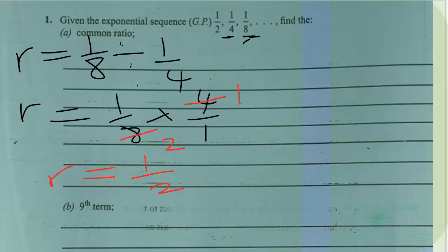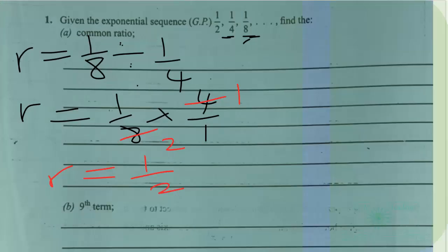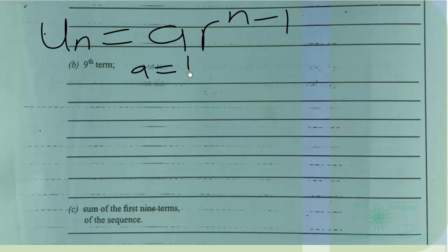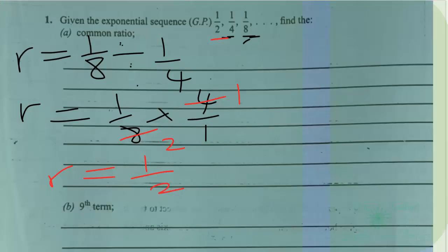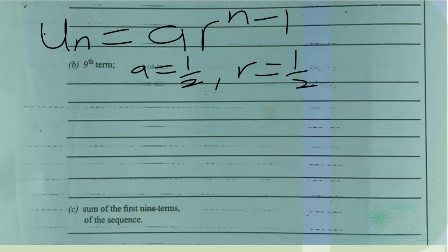Knowing the common ratio is 1/2, we can find the 9th term. The nth term of an exponential sequence is given by u_n = a · r^(n−1), where a is the first term. Here a = 1/2 and r = 1/2 as well, which we just found.